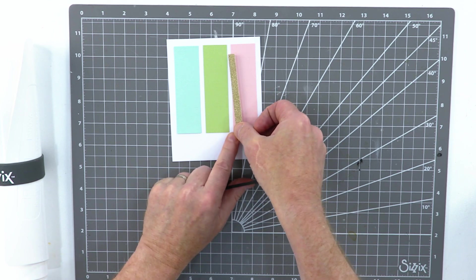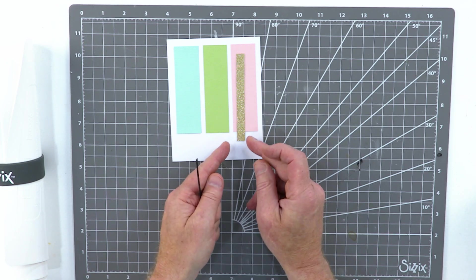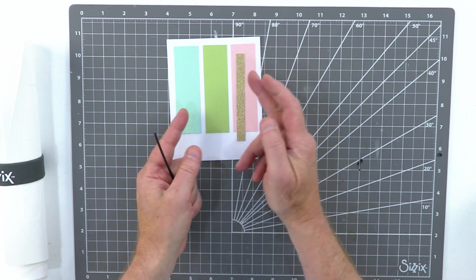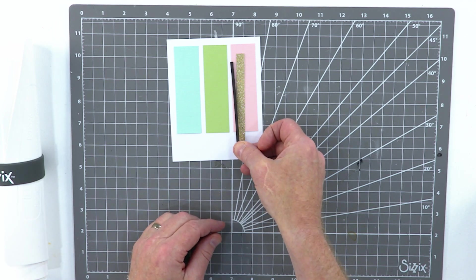What about if I introduced a little bit of gold? Suddenly that makes everything pop. But notice how I cut this down thin, because if it was the same size it would be a bit overpowering.